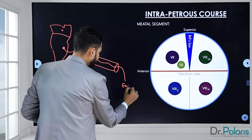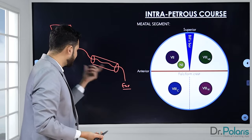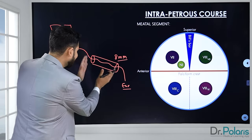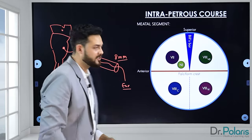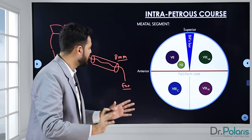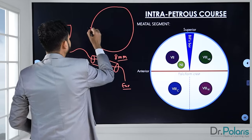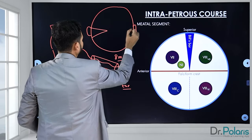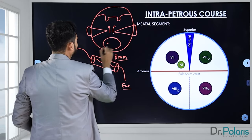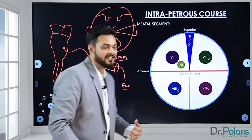The meatal segment is an important topic. It is around eight millimeters long. If we cut the internal acoustic meatus in cross-section, we see a specific diagram. This is a view of the ear from the top — the petrous part of the temporal bone, the sphenoid ridge, and the foramen magnum. Everything traveling from the brainstem goes to the internal acoustic meatus here.